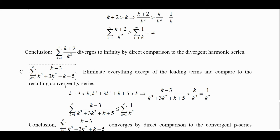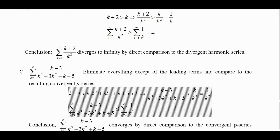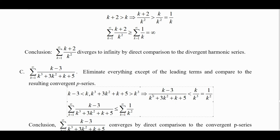Since k minus 3 is less than k, putting the minus 3 makes the fraction smaller. And since k is positive, 3k² plus k plus 5 is positive, so k cubed plus 3k² plus k plus 5 is bigger than k cubed. Making the bottom bigger and the top smaller makes the whole fraction smaller than k over k cubed, which is 1 over k².